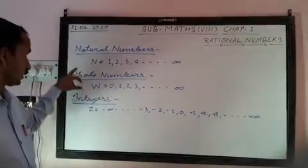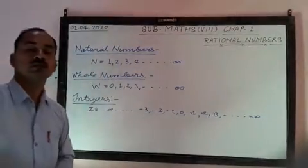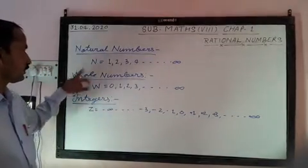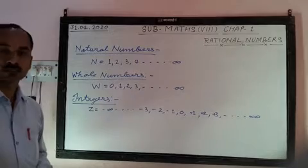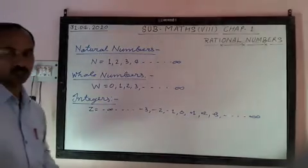So it is the overview of natural numbers, whole numbers, and these are the integers. All these numbers we have studied in previous classes: six, seven, and also in fifth class.